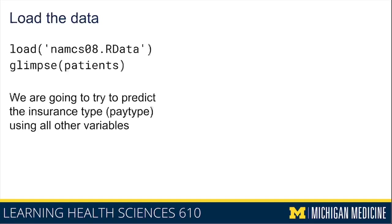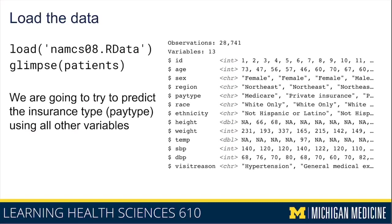So let's walk through these one by one. The first step is loading the namsys08.rdata file, which loads our sample namsys data we've been using throughout this course. Then we'll take a look at the patients data frame. The overall objective is to predict the insurance type — the pay_type variable — using all of the other variables in the patients data frame. There are 13 variables; we're going to not use ID and not use visit reason, and we'll use the remaining variables to predict pay_type.